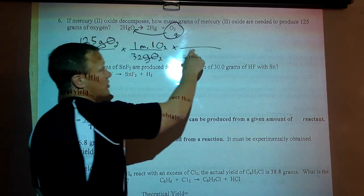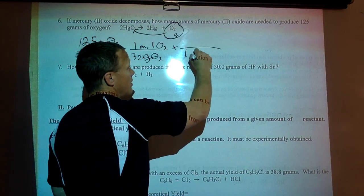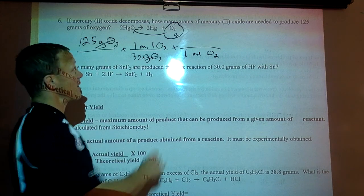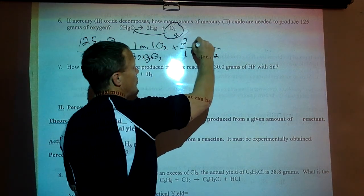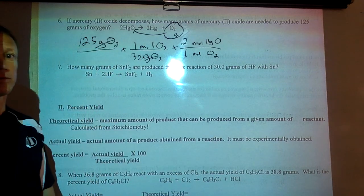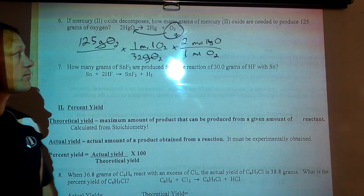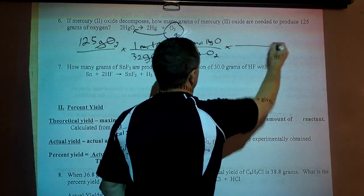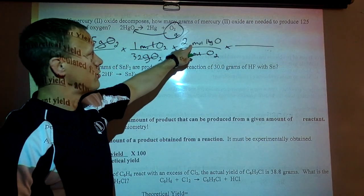Do our ratio. Oxygen's on top. So oxygen comes down here. And it is a 1. So it's for every 1 mole of oxygen that's produced in the reaction we used 2 moles of HgO. So this cancels.